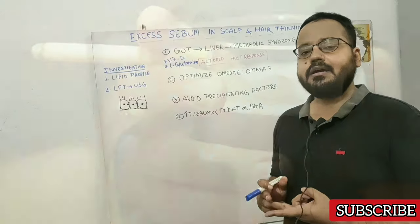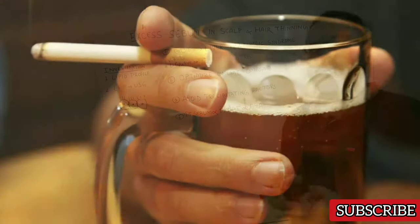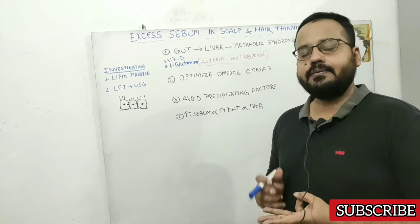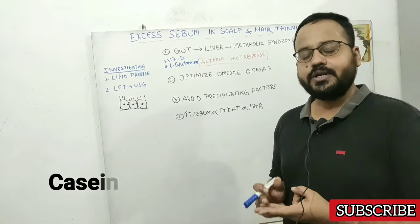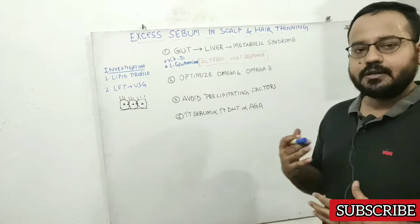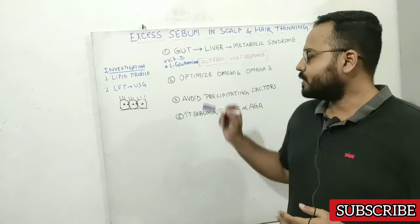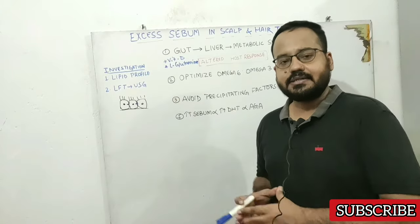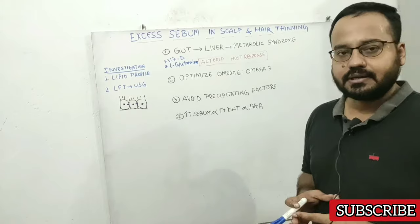Avoid precipitating factors like alcohol and smoking. In genetically predisposed individuals, gluten and dairy proteins can make things worse because they can damage the villi of your intestinal cells and increase leaky gut.